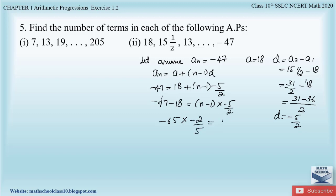Transferring −5/2 to the left-hand side by multiplying both sides by −2/5: −65 × (−2/5) = n − 1, so 13 × 2 = 26 = n − 1. Therefore n = 26 + 1 = 27.